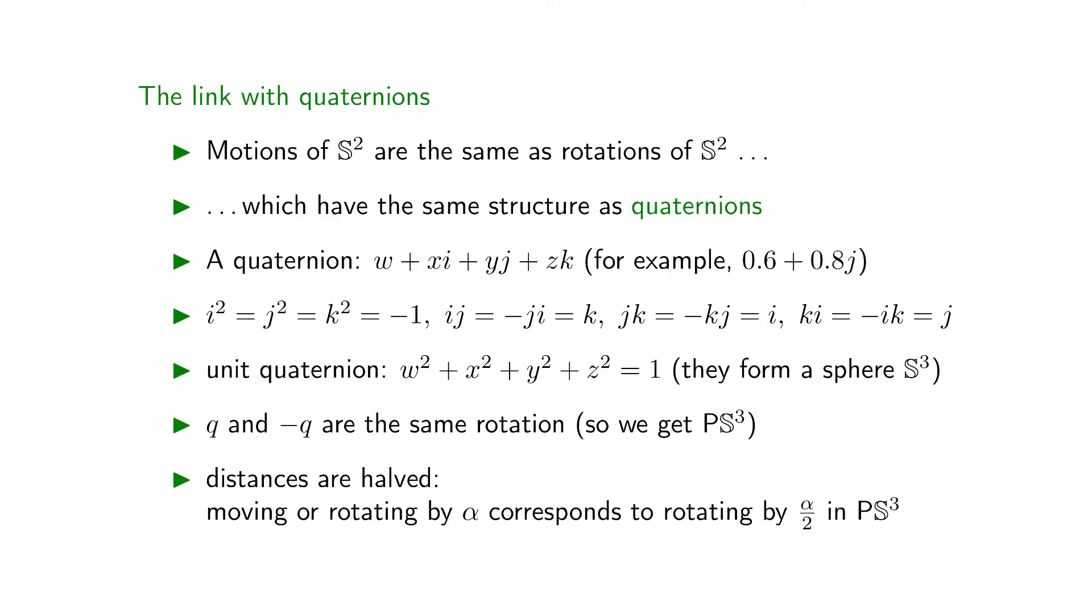So, just like in the motion space of the Euclidean space, we got to the same point if we moved by 2pi in the phi direction. Here, q and minus q are the same point.